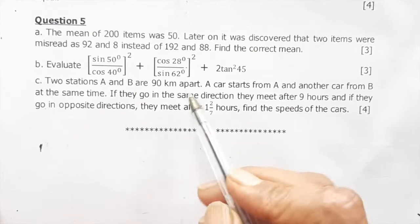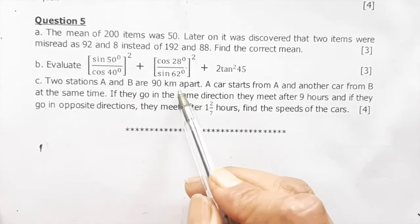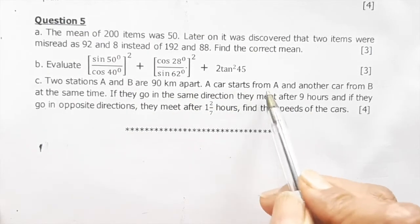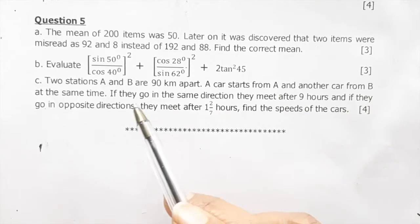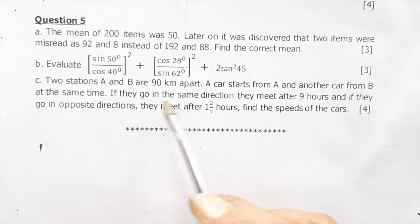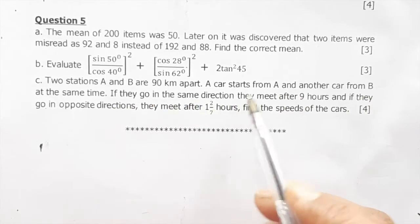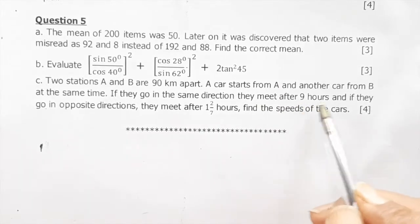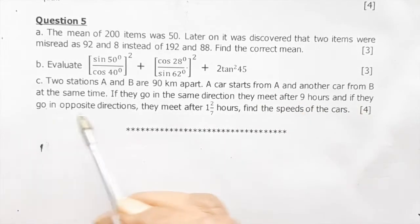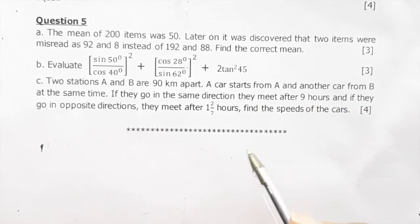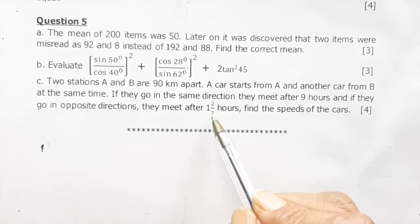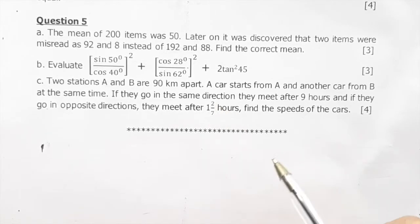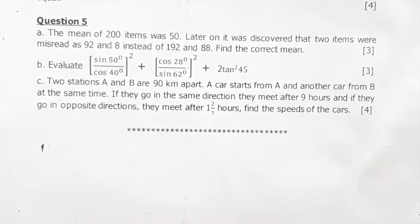Two stations A and B are 90 kilometers apart. A car starts from A and another car from B at the same time. If they go in the same direction they meet after nine hours, and if they go in the opposite direction they meet after 1 and 2/7 hours. Find the speed of the cars.